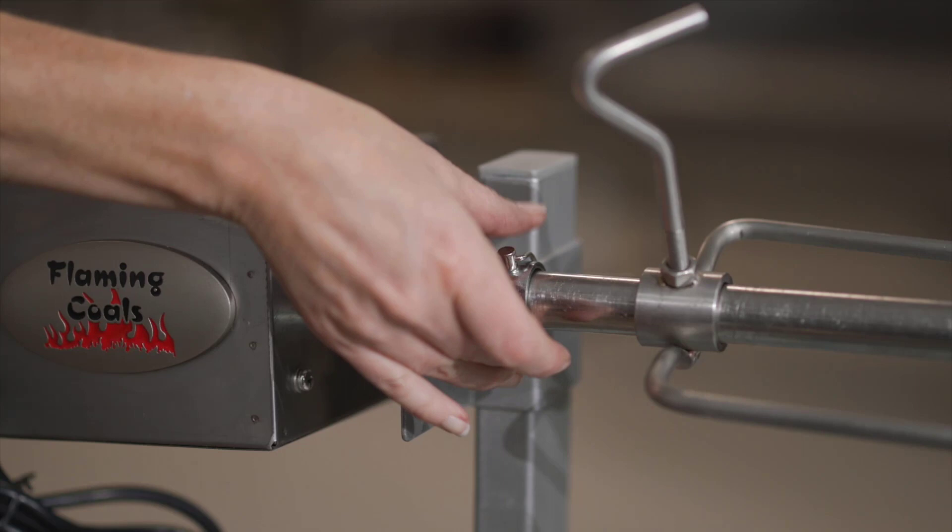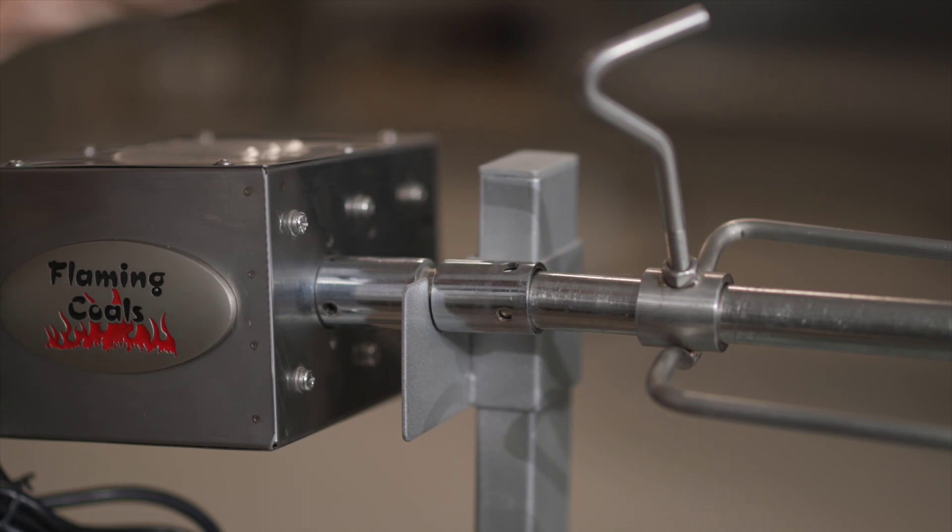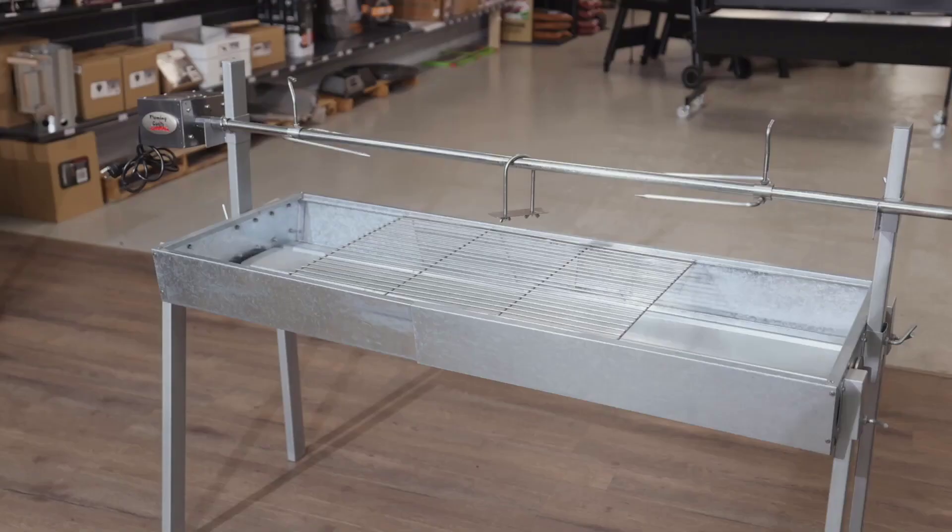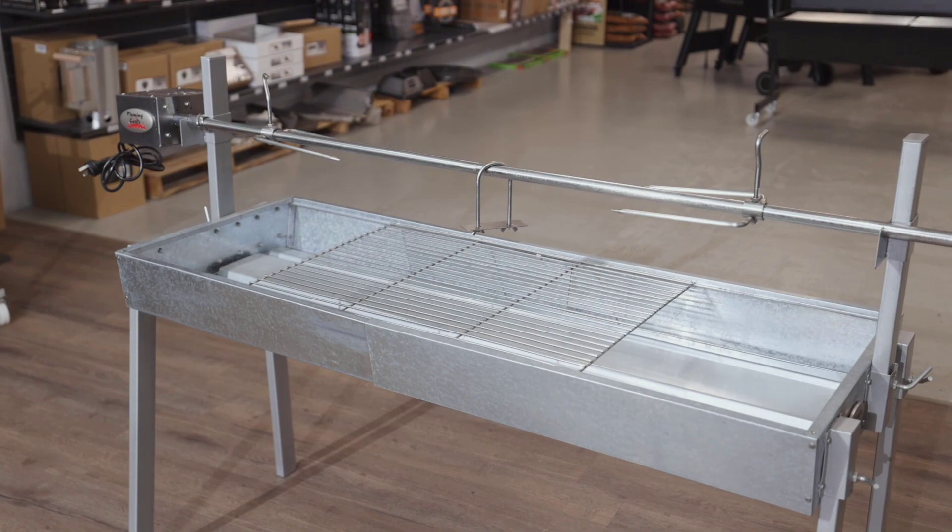A quick release pin skewer attaches to the motor and is easily removable in a second when you need to quickly get your meat away from the fire. All accessories are made from 304 food grade stainless steel, are easy to clean and dishwasher safe.